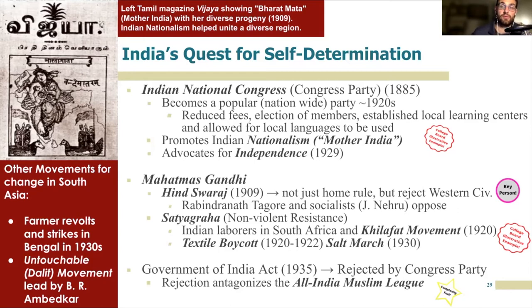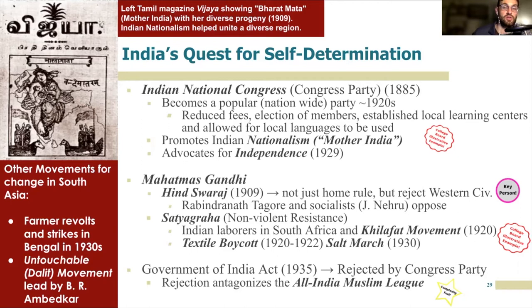These movements put a lot of pressure on the British to make concessions. Eventually they formulated the Government of India Act in 1935, which was rejected by the Congress Party because by this point they were pushing for independence, not simply home rule. However, this rejection had the unintended side effect of antagonizing the All India Muslim League — which represented particularly the interests of Muslims in British India — in part because the Act had set aside a number of seats for Muslim representatives. This furthered a small but growing rift between Muslim leaders and Congress Party leaders about the direction a future independent India should take.